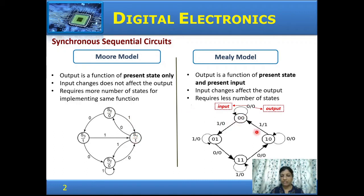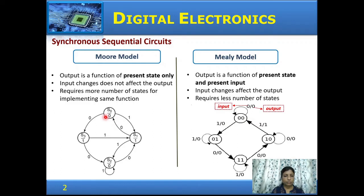Comparing with the Mealy model — again four states are represented: 00, 10, 11, and 01. Here, the left-hand value indicates the input and the right side indicates the output. When in state 00 with input 0, the output is 0 and the circuit remains in the same state. With input 1, the output is 0 and the circuit moves to state 01. In a Mealy machine, the output depends on the current state and the input, whereas in the Moore machine, the output depends only on the state.